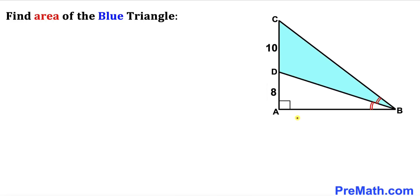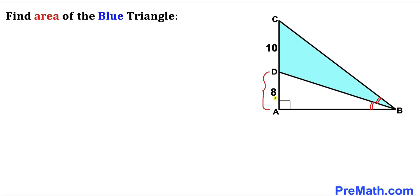In this video we have got a right triangle ABC such that line BD is an angle bisector of angle ABC. In other words if this angle is alpha then this angle has got to be alpha as well. Furthermore, line segment CD is 10 units whereas line segment AD is 8, and now we are going to calculate the area of this blue shaded triangle BCD.